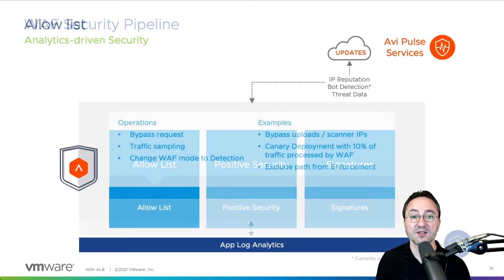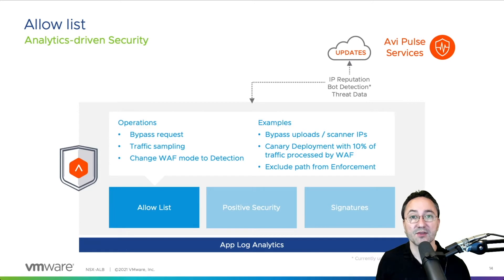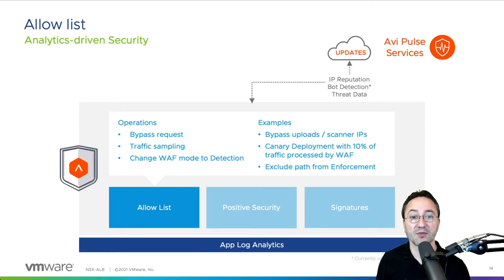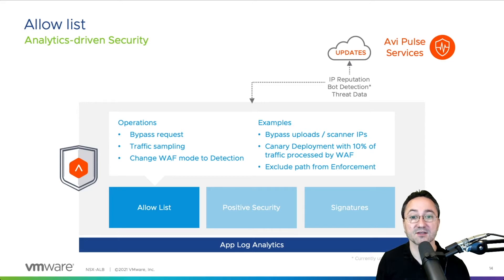This video is all about the allow list functionality. It can be configured for parts of your application that should be bypassed from the application firewall checking, or when other use cases require direct access to the unprotected application.